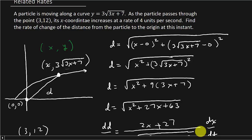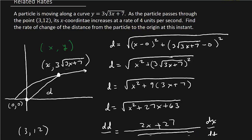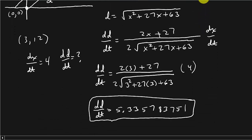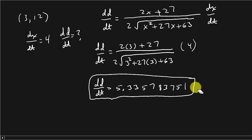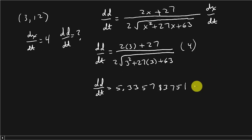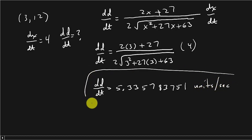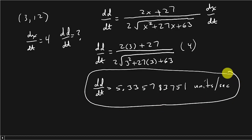They don't specify inches or feet, but they do tell us seconds. So the answer is approximately 5.3 units per second — that's how fast the distance is changing at that instant.